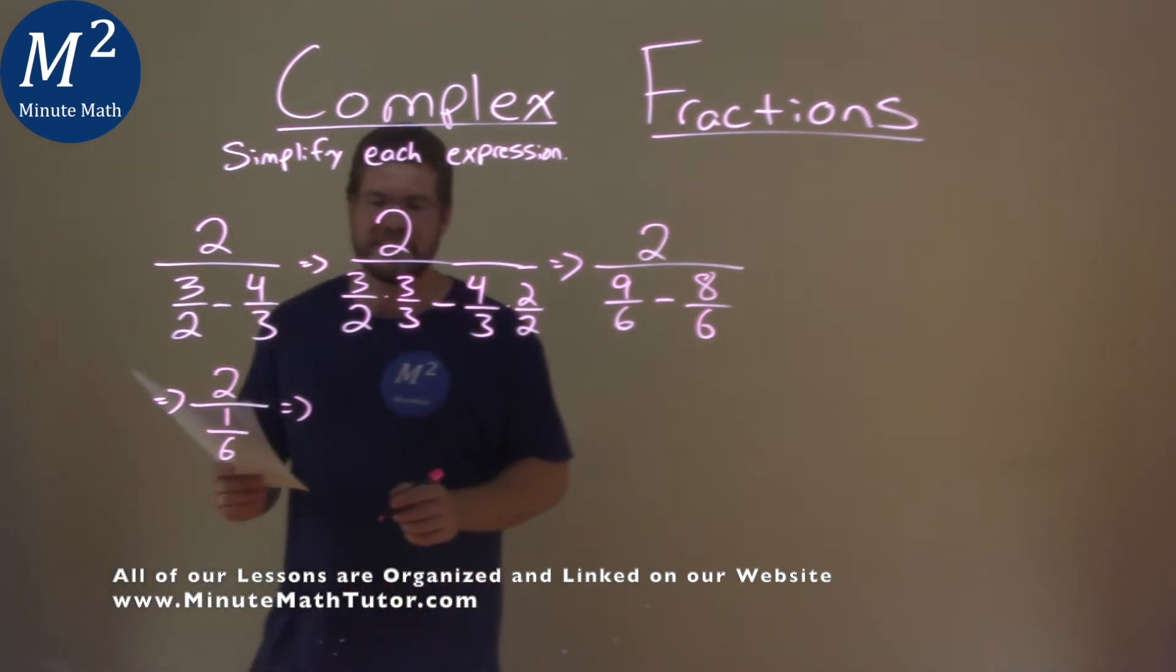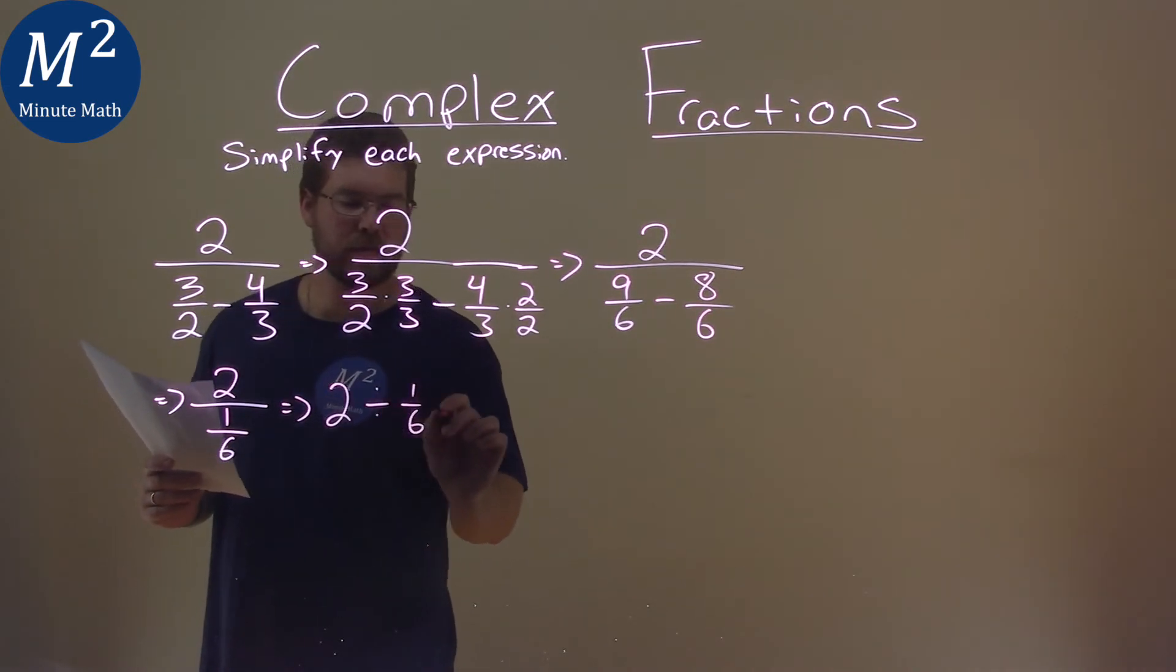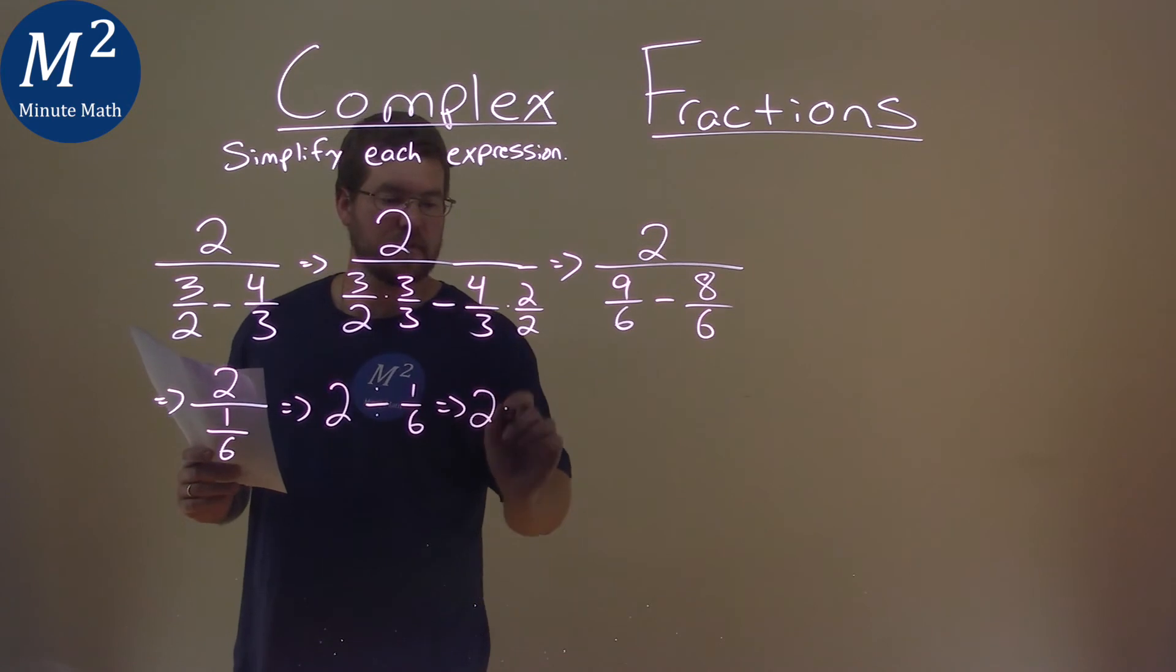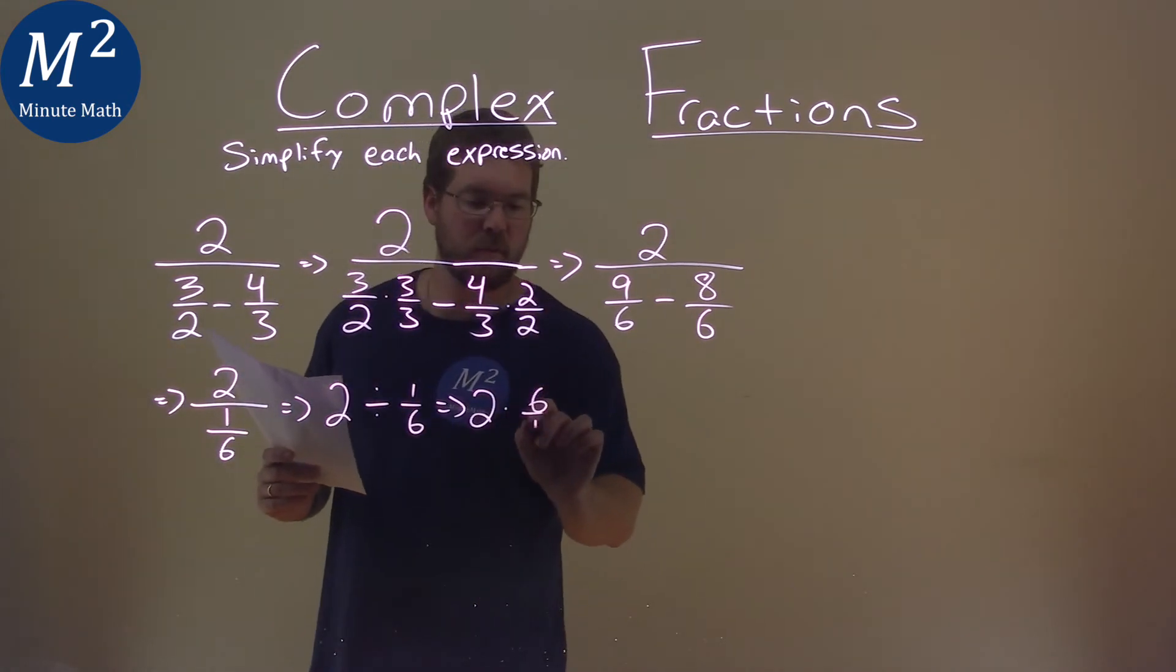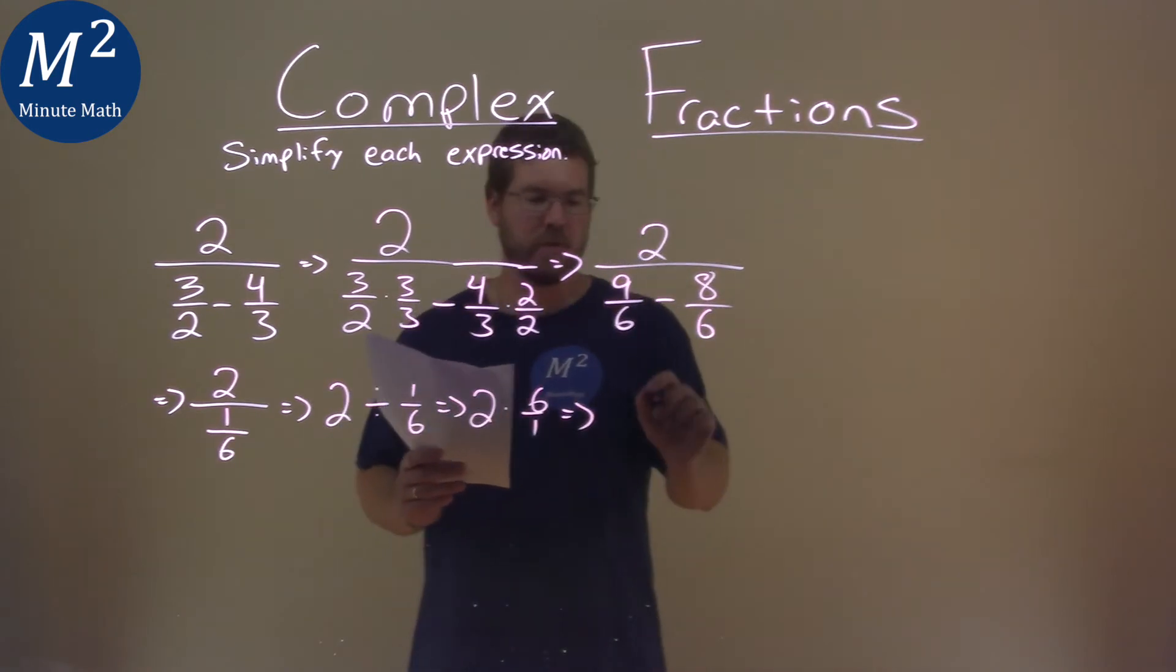2 divided by 1 sixth is the same as 2 times—flip the 1 sixth to be 6 over 1. What is 2 times 6? Good old 12.